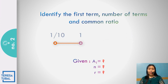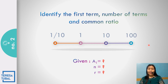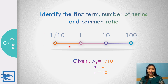How about number 2? In the geometric sequence 1/10, 1, 10, and 100, the first term is 1/10. The number of terms is 4. The common ratio is found by dividing the third term by the second term: 10 divided by 1, that is equal to 10.